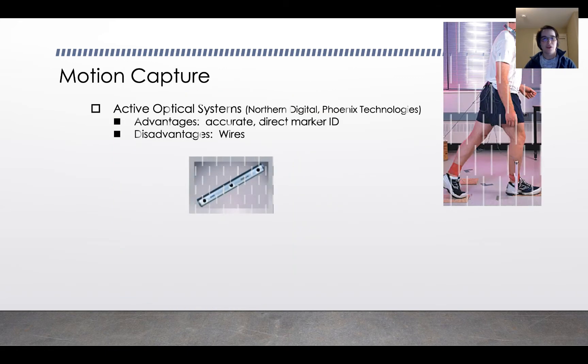Now there are a couple different kinds of motion capture labs. One is active optical systems. For example, Northern Digital and Phoenix Technologies make this kind of system. These bars that you see here have LEDs in them. They're active systems, which means the system is powered, which unfortunately means you need wires. The subject here is trailing some wires behind him. The advantage is that each of the markers is powered, so it's accurate and it's direct marker ID. You know exactly which marker it is all the time.